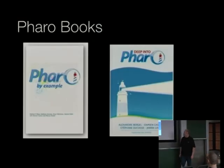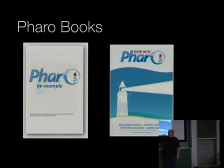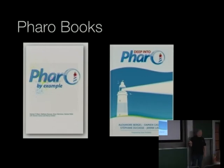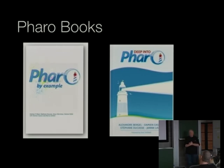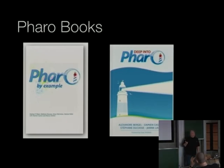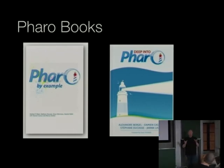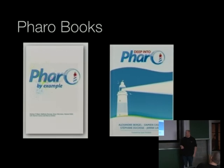Another thing we did is release a second book. We already have the Pharo by Example book, which needs updating since it uses Pharo 1.1. The second book covers more advanced topics — not introductory things, but things on top of Faro, like external libraries such as Roassal, the visualization engine, and really deep topics like how exceptions are implemented. A third book is in preparation — if someone is interested in contributing, that's always welcome. The third book will be about Faro in the enterprise: what you need to know to deploy Faro professionally and what libraries you need.